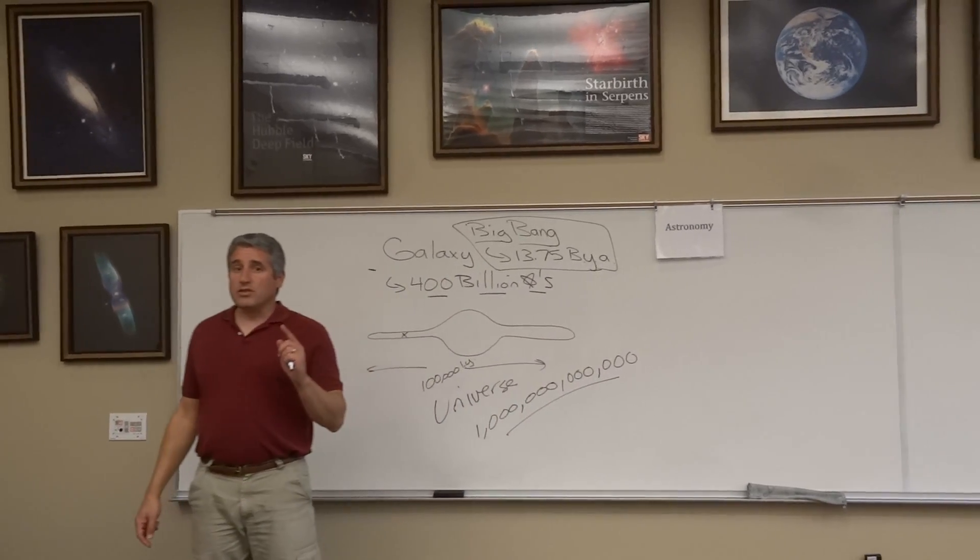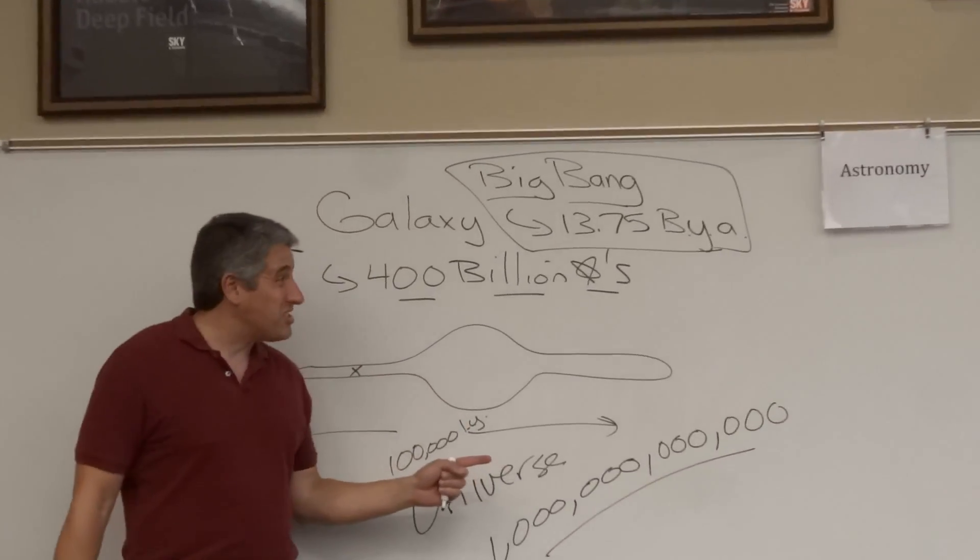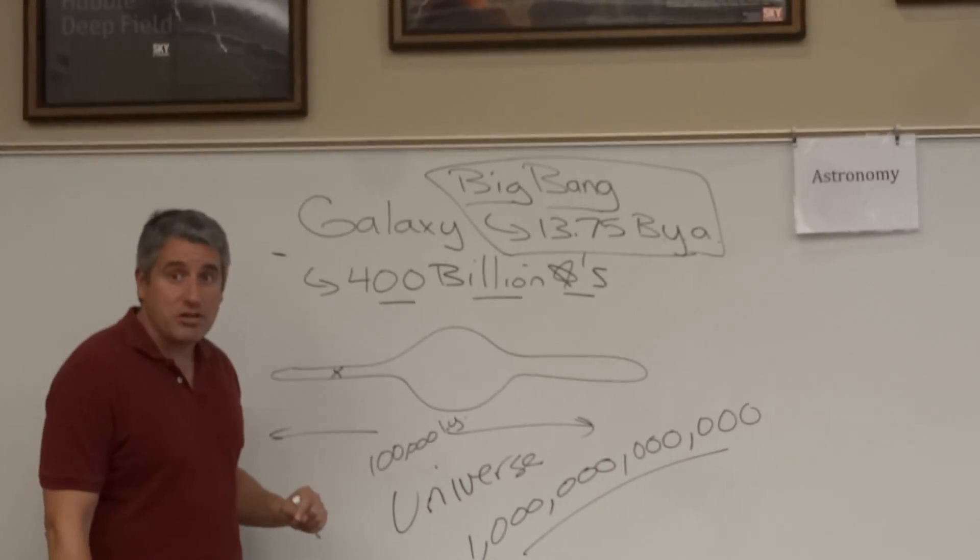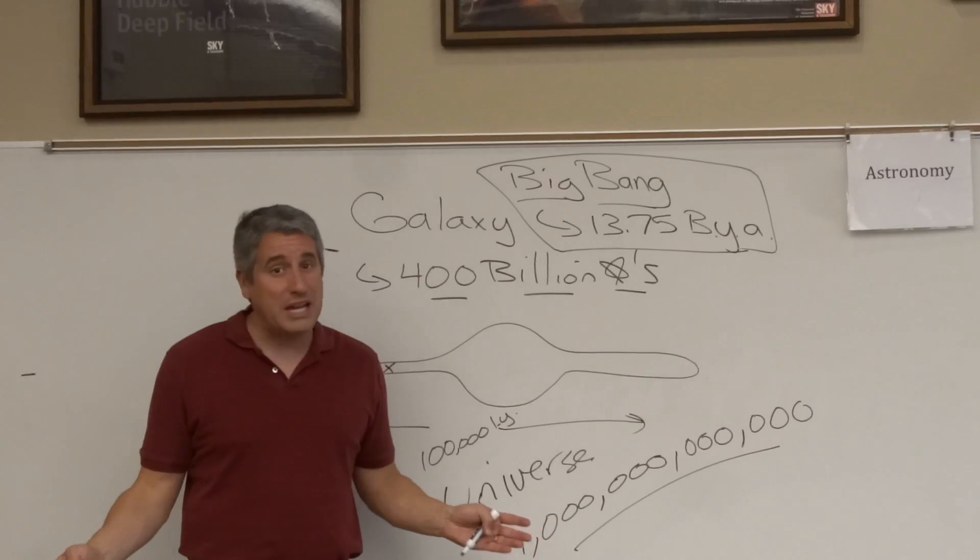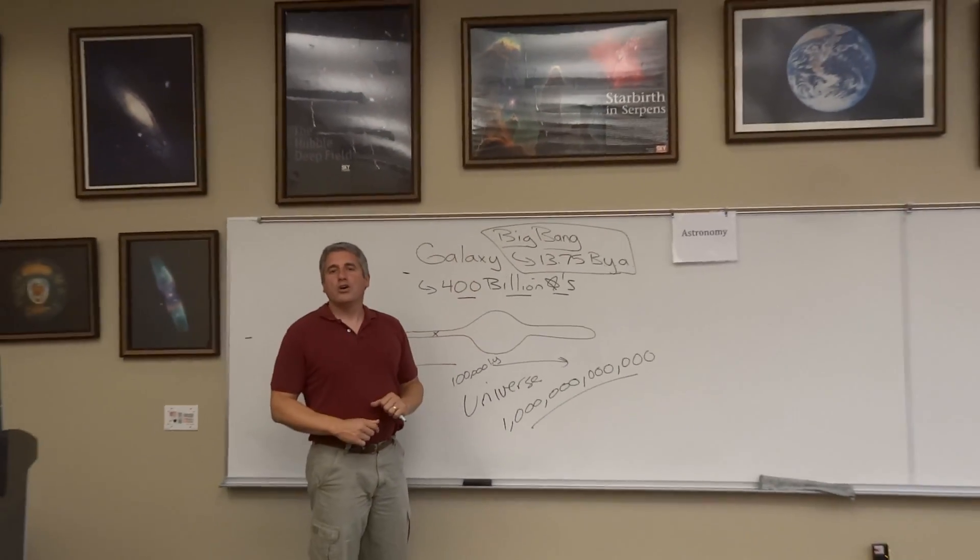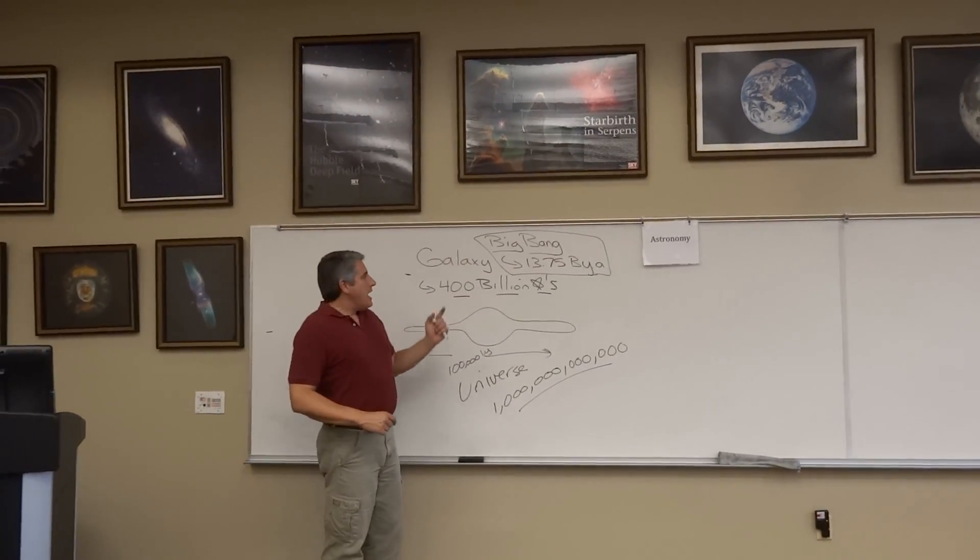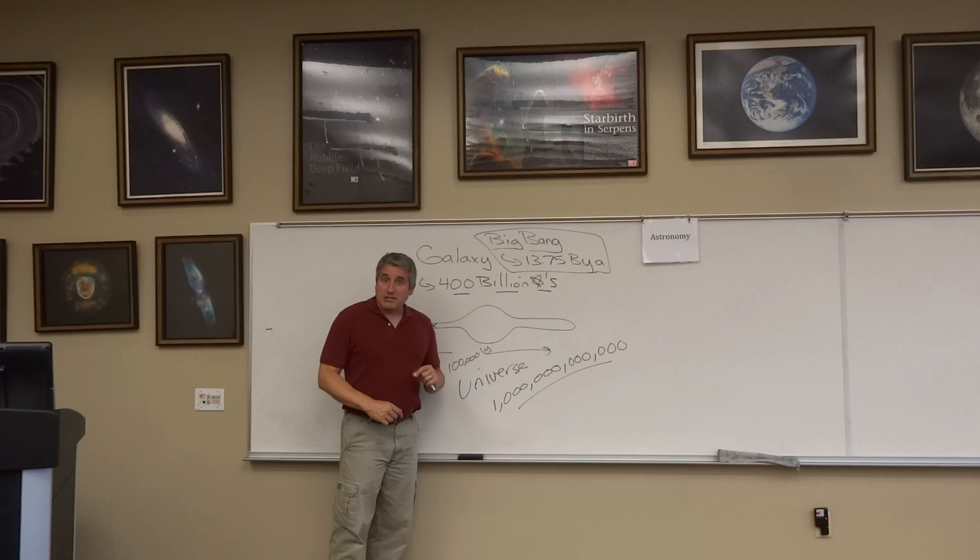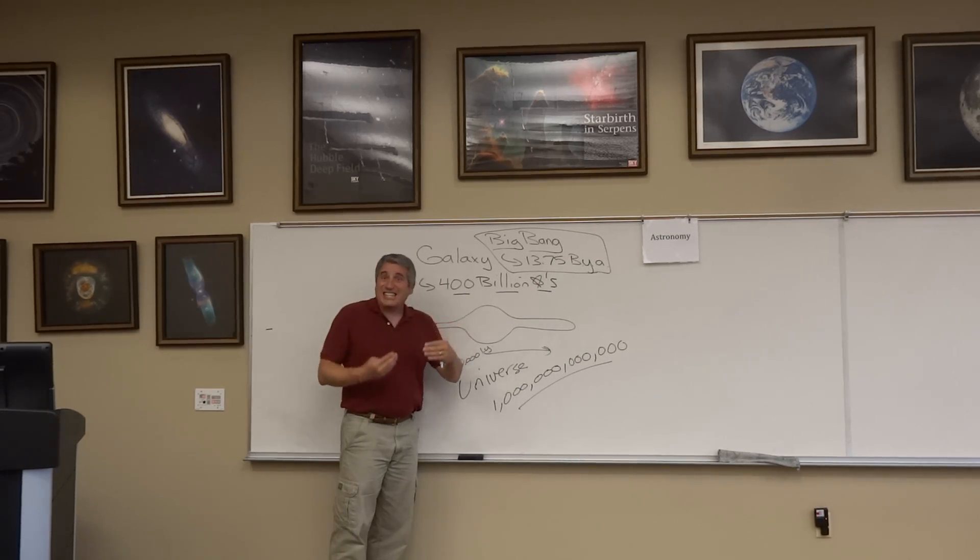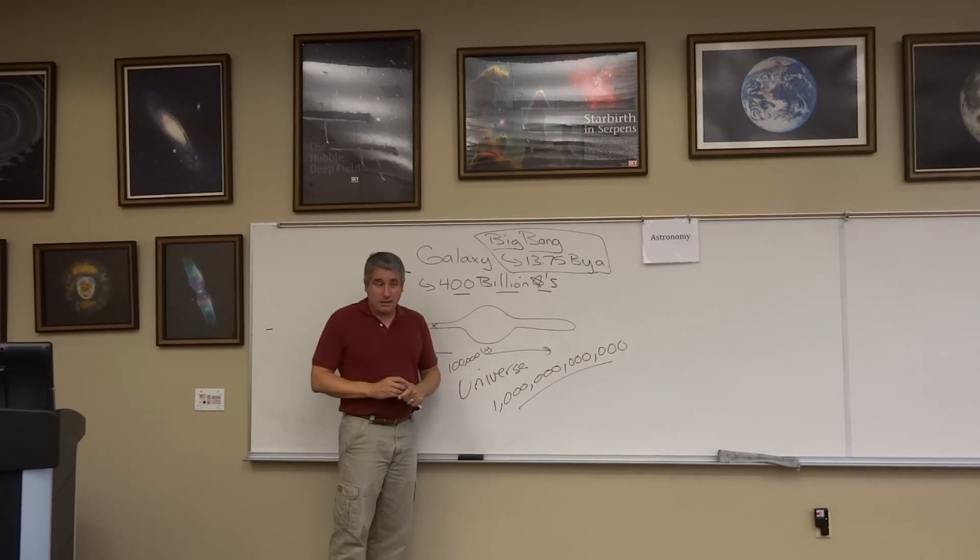When we talk about the universe, we're talking about one trillion galaxies, each having 400 billion stars, each of those stars having planets, many of those planets looking like Earth. Though we might never travel to these places, we can take the light that has arrived at us and understand a little bit more about what's out there.